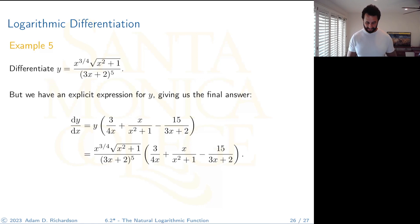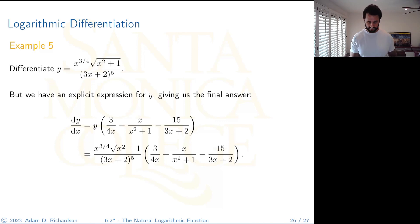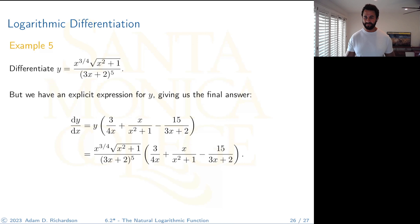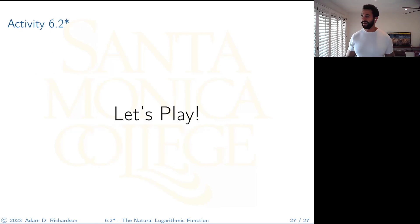You could arrive at the same derivative using the quotient rule, product rule, chain rule, and power rule — but you'd need to be very careful. Logarithmic differentiation gives the same result more cleanly. On that note, that's it for this section on the natural logarithm. Next time we'll talk about the natural exponential function, deriving it from what we got today.